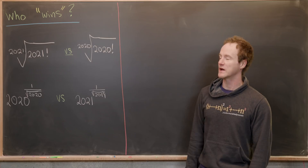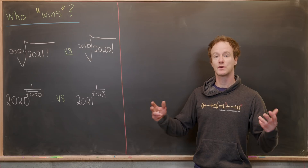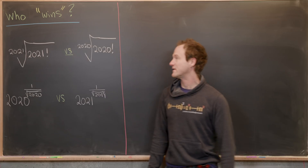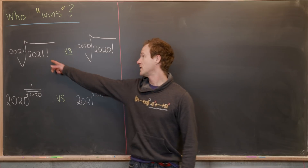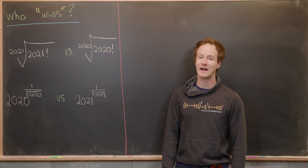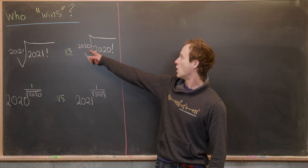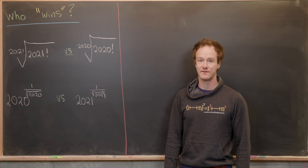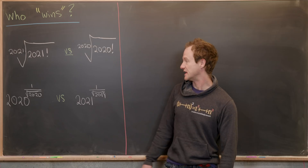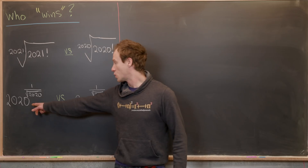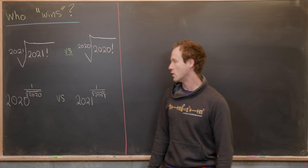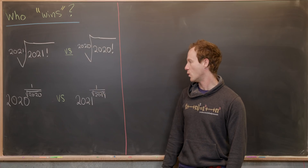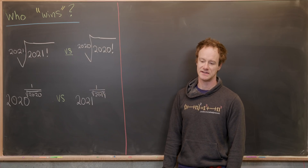We want to answer two questions. First, which is larger: the 2021st root of 2021 factorial, or the 2020th root of 2020 factorial? Second, is 2020 to the power of one over the square root of 2020 larger, or 2021 to the power of one over the square root of 2019?